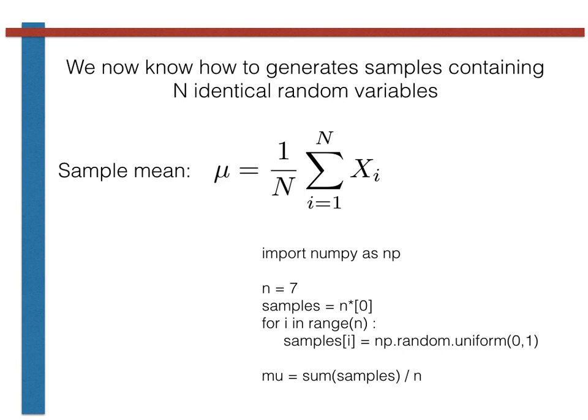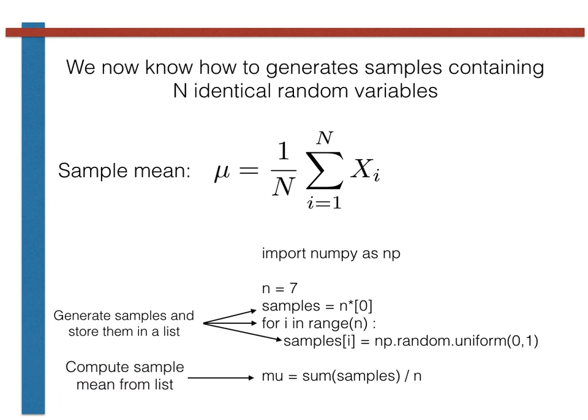The first part of this code generates seven samples and stores them in a list called samples. The second part, meanwhile, computes the sample mean by summing all the samples in the list using the Python function sum, and by then dividing this quantity by the number of samples that were generated.